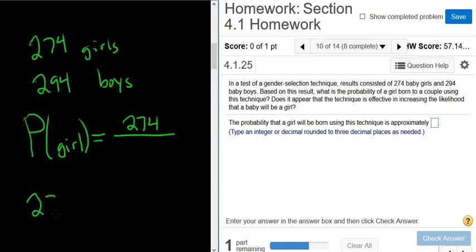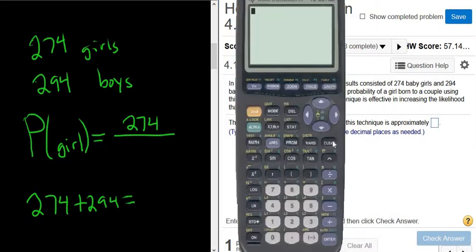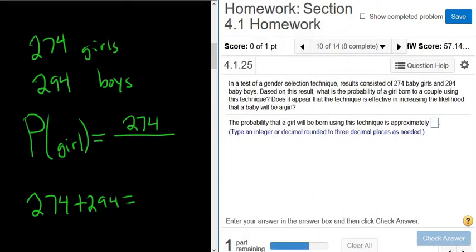So we have to add the number of girls, which is 274, to the number of boys, which is 294. Okay, I should have a calculator here. Let's see. Yes, yes I do. All right, so 274 plus 294. So 568 ways to pick a person.